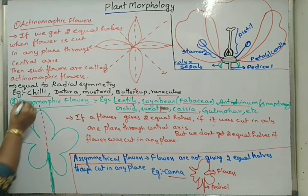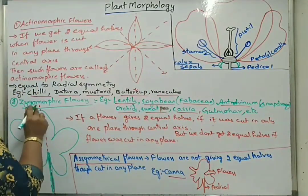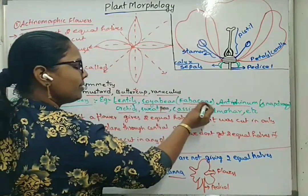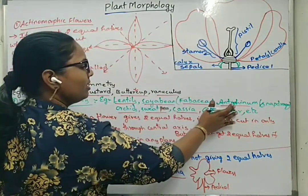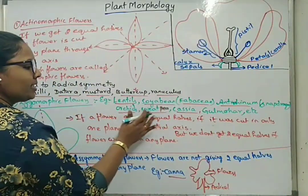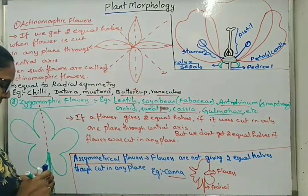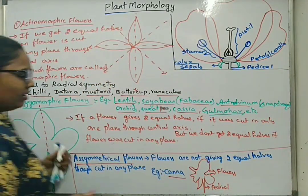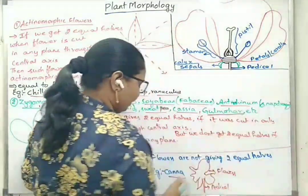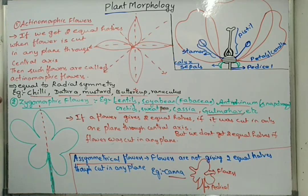So this is an asymmetrical flower as seen in the case of canna. To summarize the examples: actinomorphic — chilli, datura, mustard, buttercups, ranunculus; zygomorphic — lentils, soya bean (Fabaceae or Papilionaceae), antirrhinum, orchids, sweet pea, cassia, gulmohar; and under asymmetrical type, the example given in NCERT is only canna. These are three different types of flowers based on symmetry: actinomorphic, zygomorphic, and asymmetrical.